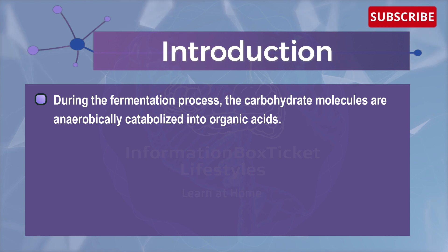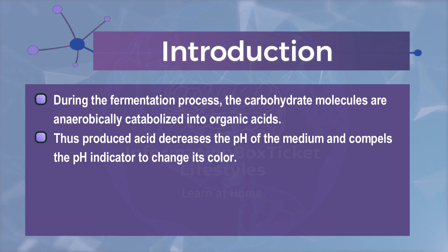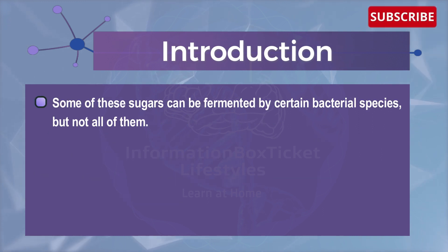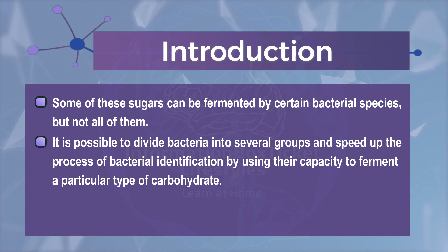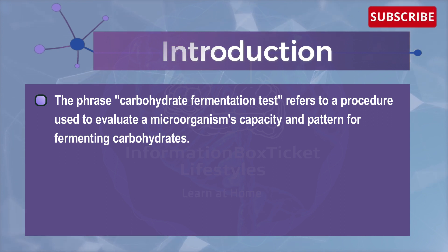During the fermentation process, the carbohydrate molecules are anaerobically catabolized into organic acids. The produced acid decreases the pH of the medium and compels the pH indicator to change its color. However, not all bacteria are capable of fermenting the aforementioned sugars. It is possible to divide bacteria into several groups and speed up bacterial identification by using their capacity to ferment a particular type of carbohydrate. The carbohydrate fermentation test refers to a procedure used to evaluate a microorganism's capacity and pattern for fermenting carbohydrates.